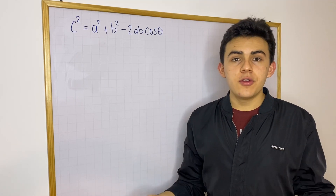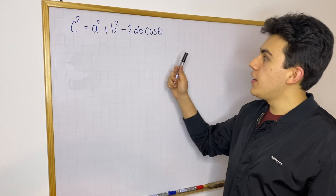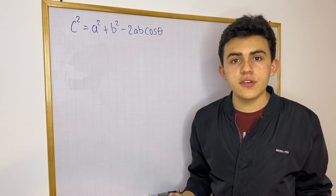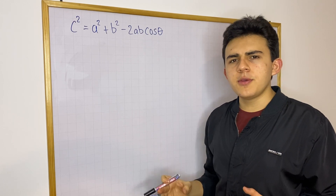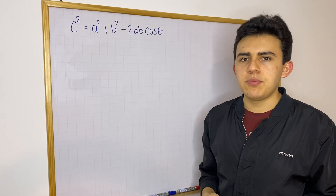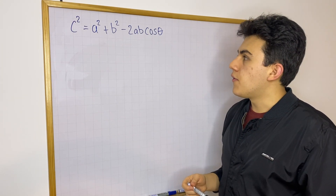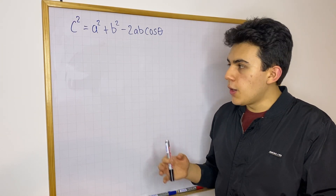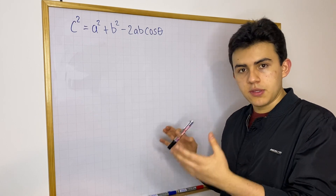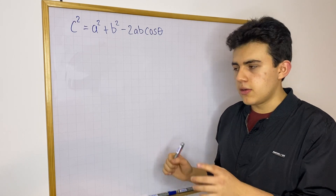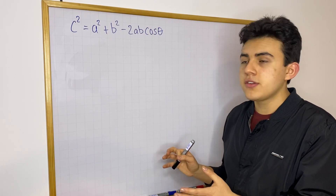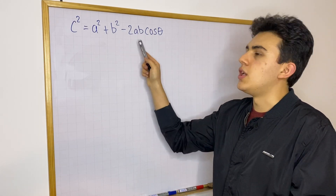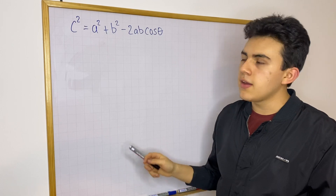Hi everyone, what's up? Today I want to show you how you can derive the law of cosines using vectors. This is going to be a really interesting application of the dot product, and how, if you have a specific setup of three vectors, you can come up with the law of cosines.